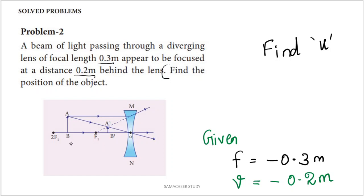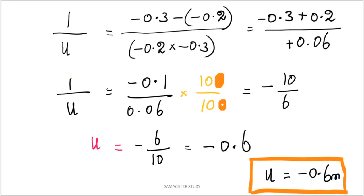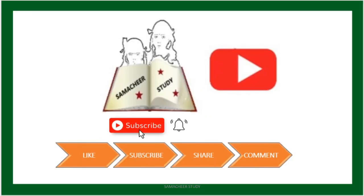So u is the position of the object — the object is placed at a distance of 0.6 meter, and u equals minus 0.6. That is the answer. Hope you understood this problem. If you like this video, please subscribe and share it with your friends. Thank you so much for watching.